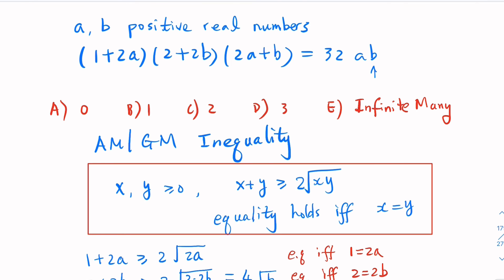So going back to the original problem, the answer is B. We use AM-GM inequality, even though this is an equation in two variables.